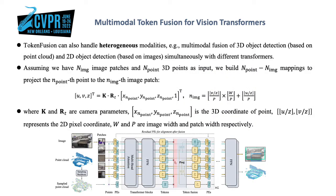Token fusion can also handle heterogeneous modalities. For example, multimodal fusion of 3D object detection based on point cloud and 2D object detection based on images simultaneously with different transformers. Assuming we have image patches and 3D points as input, we build multimodal mappings to project the point to the image patch. Different from the fusion for homogeneous modalities, additional intermodal projections are needed after the pruning modules, and transformers cannot be shared.